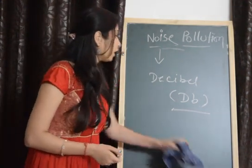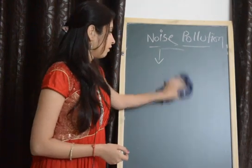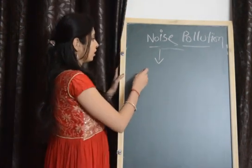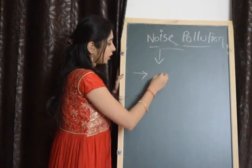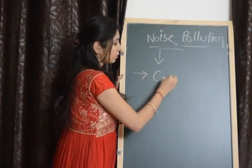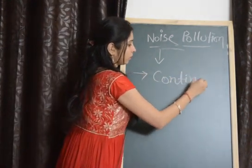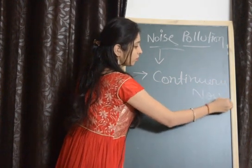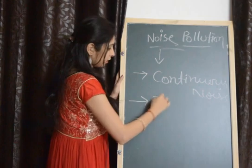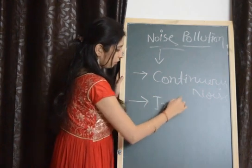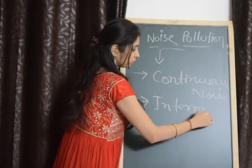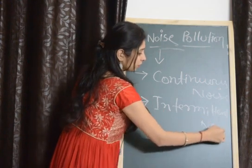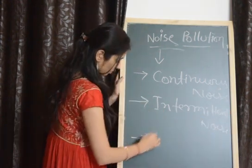What are the kinds of noise? When we talk about noise pollution, we should know about the kinds of noise. Noise can be categorized into three types: first is continuous noise, second is intermittent noise, and third is impulsive noise.